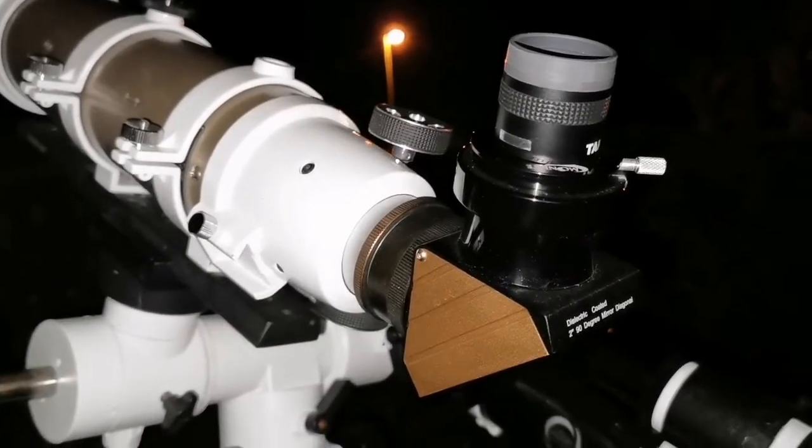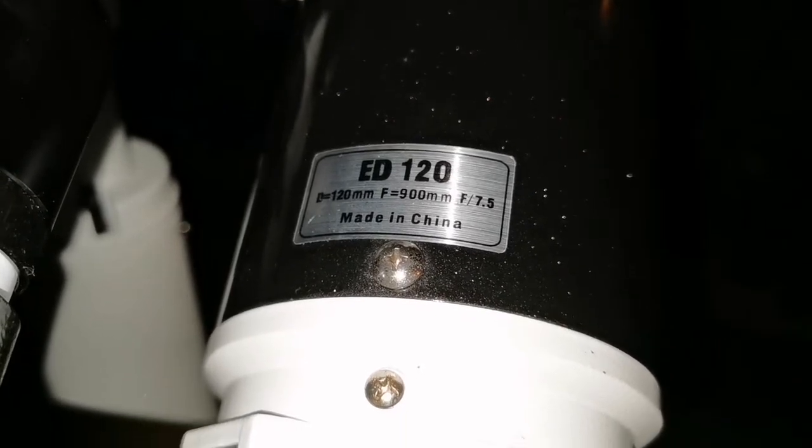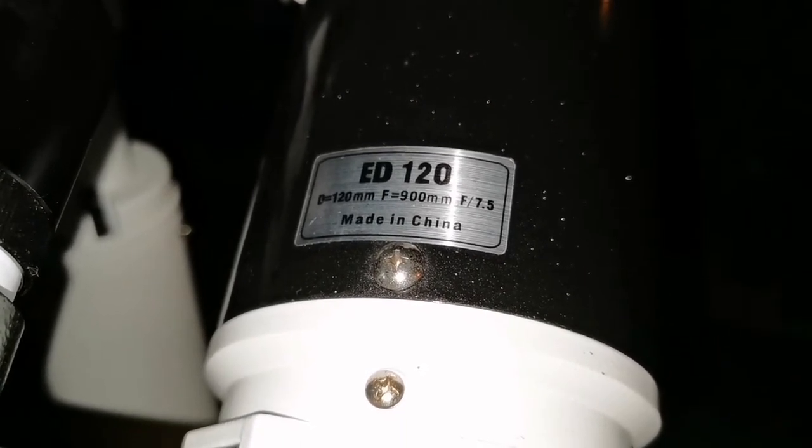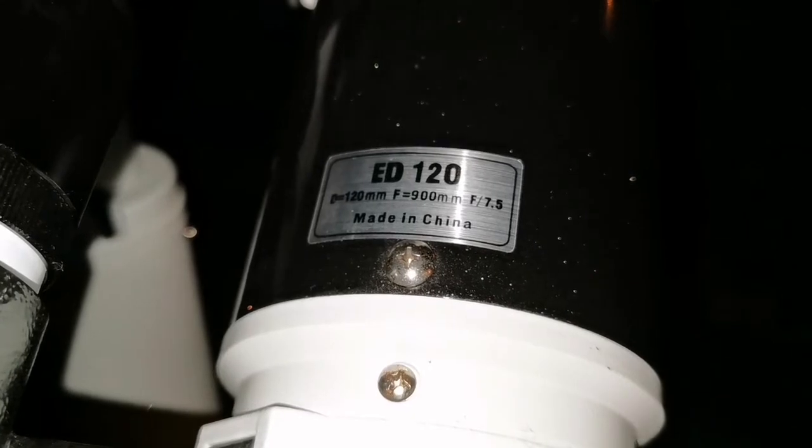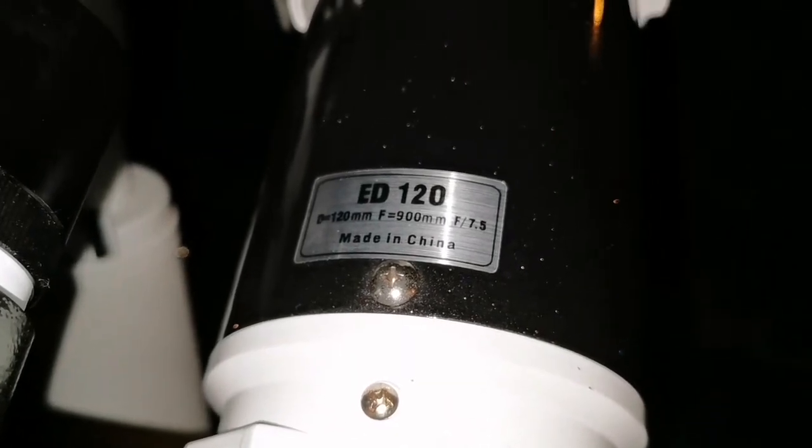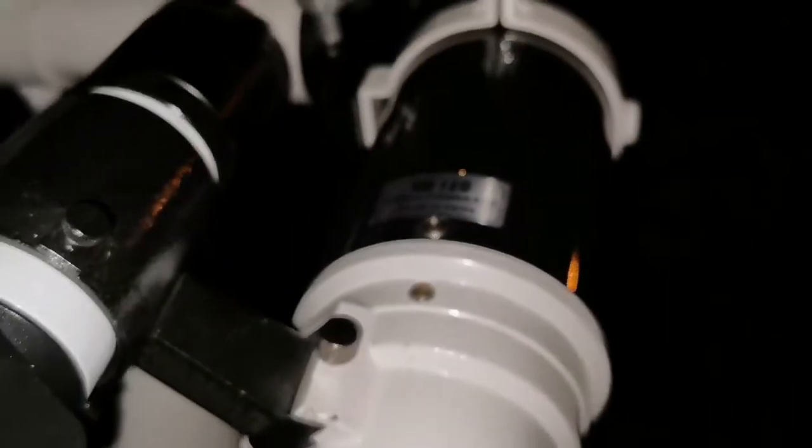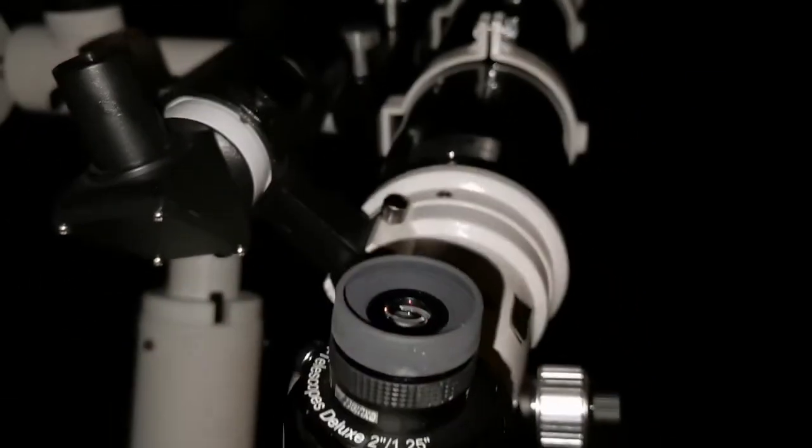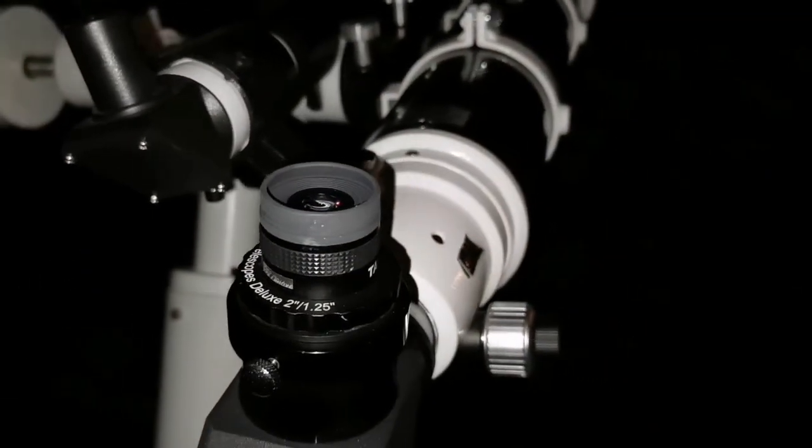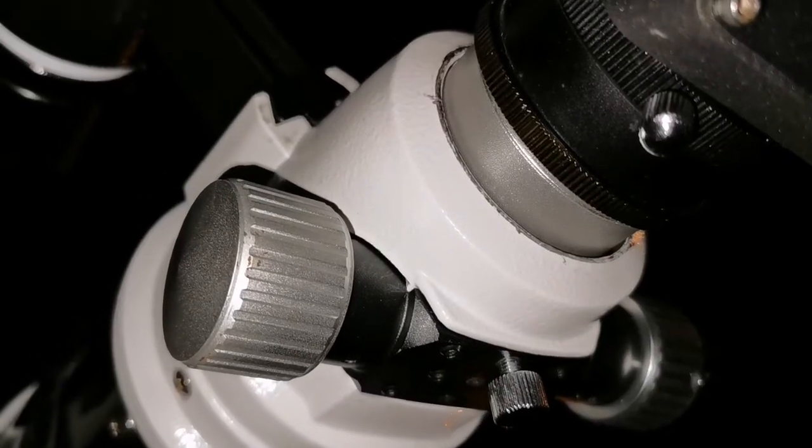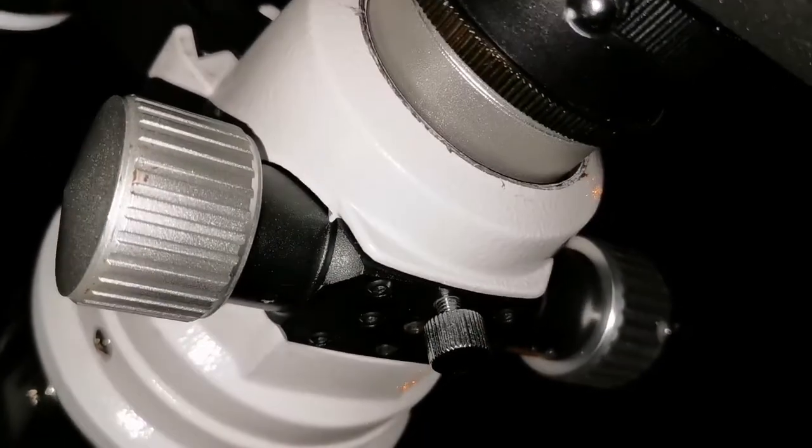The next telescope that I used is a Skywatcher ED120, and it again had this problem. F 7.5 focal ratio, and this had a really bad problem. It has a dual Crayford focuser and it was slipping loose, completely coming down.